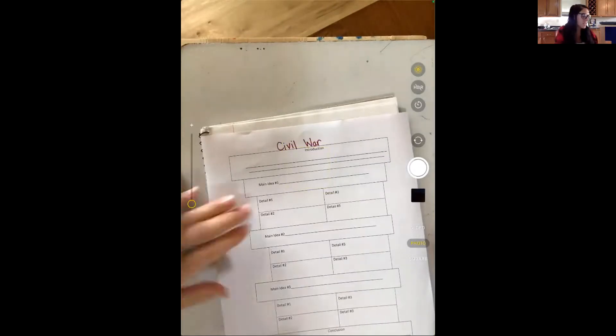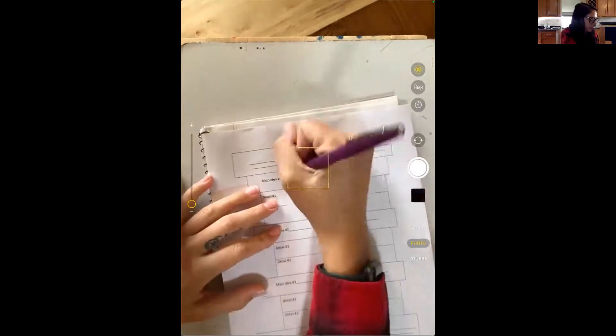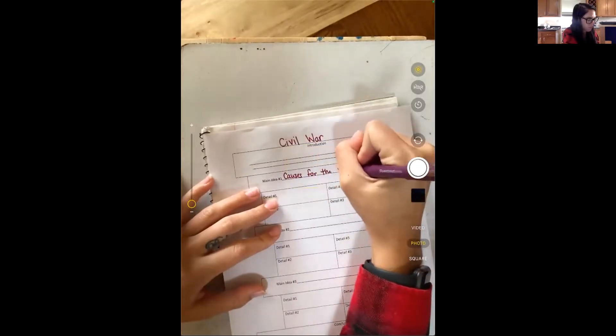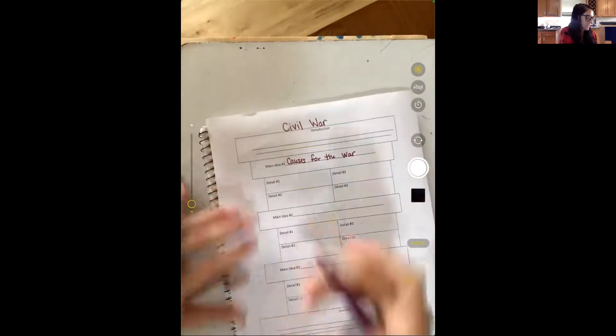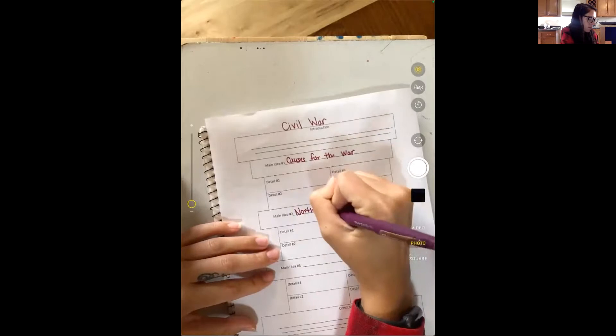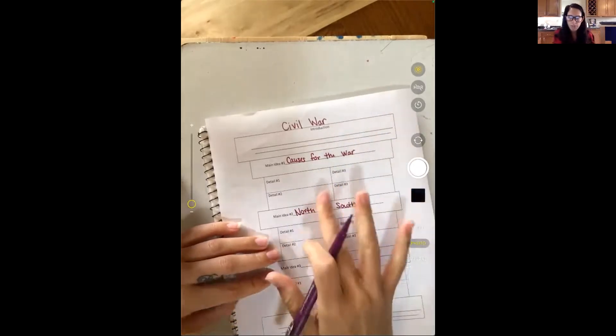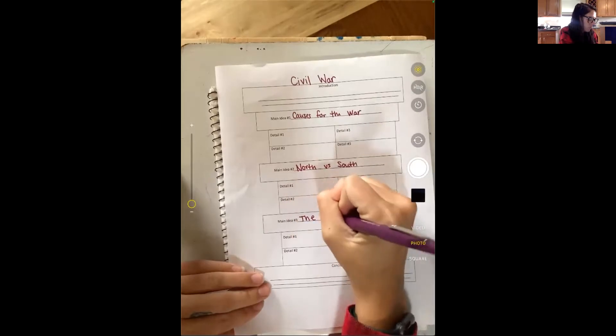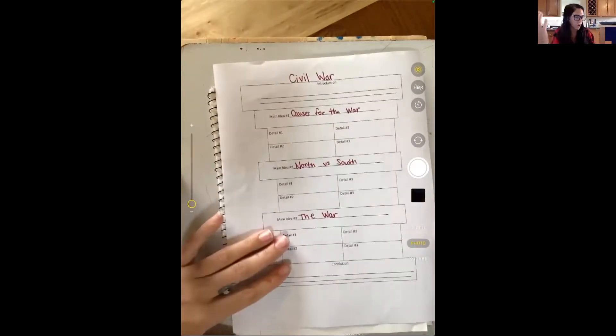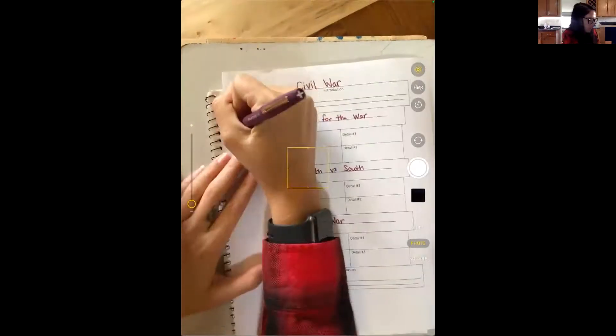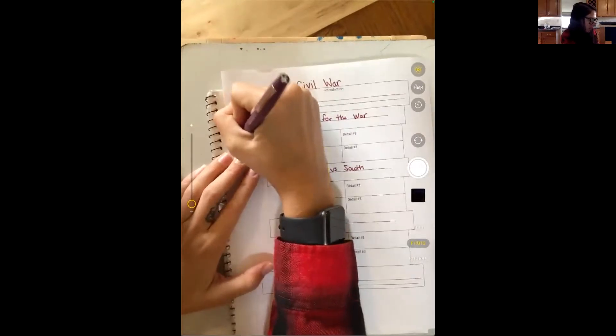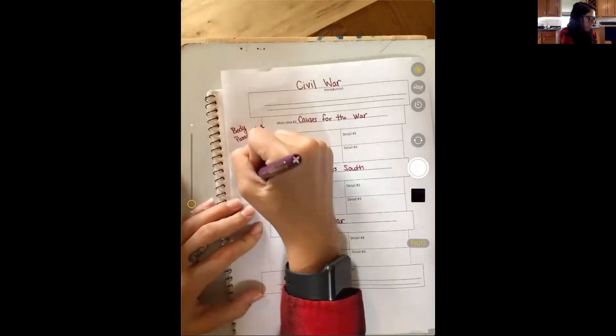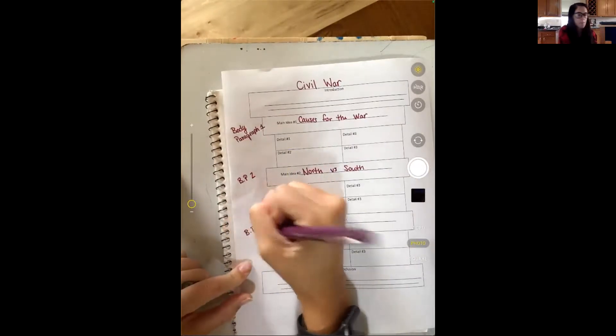And I want to kind of think about my order. So I think my first main idea is going to be the causes for the war. My second main idea is going to be that North versus South and how they were different or how they were the same. And then my third main idea is going to be the war, what actually kind of happened during the war. And remember each of these is going to be a body paragraph. Body paragraph one, body paragraph two, and body paragraph three.